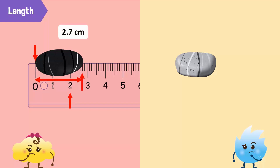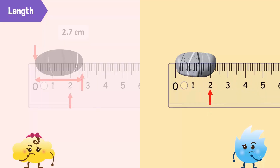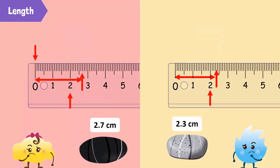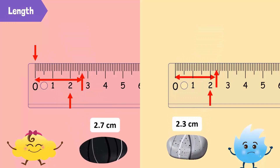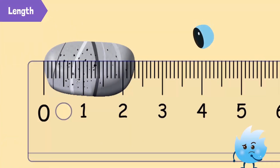We can now see that Bubbles' pebble is two centimeters and seven millimeters long. We measure Spiky's pebble the same way. Bubbles' pebble is longer than Spiky's.